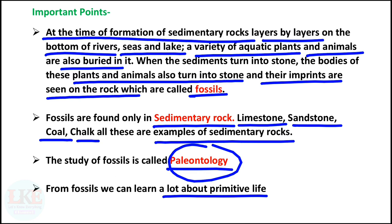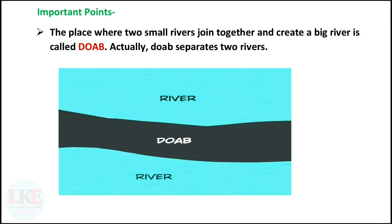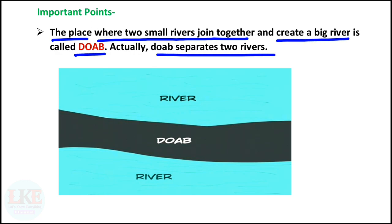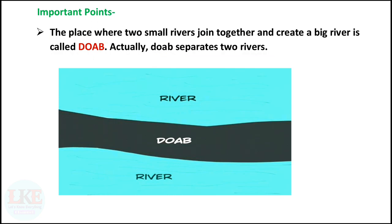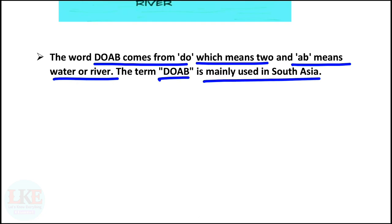Next question: what is Doab? Right answer option A — a land between two rivers. The place where two small rivers join together and create a big river is called Doab. Actually, Doab separates two rivers, as you can see in this image. The word Doab comes from 'do' which means two, and 'ab' means water or river. The term Doab is mainly used in South Asia.